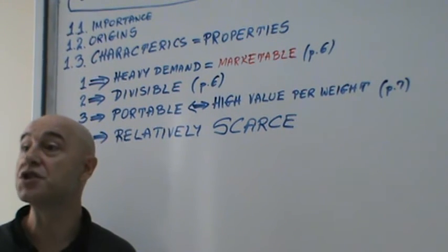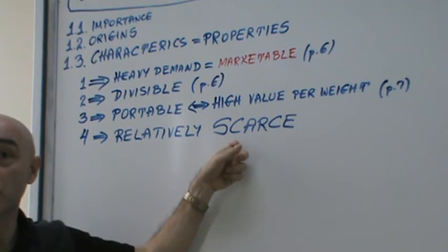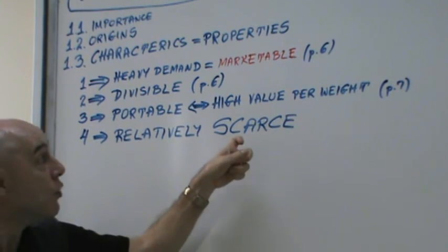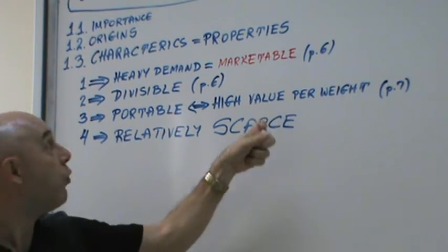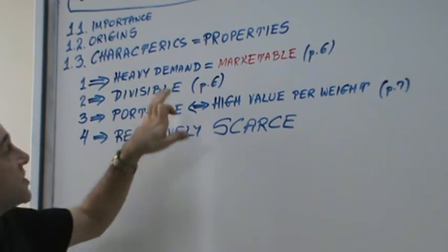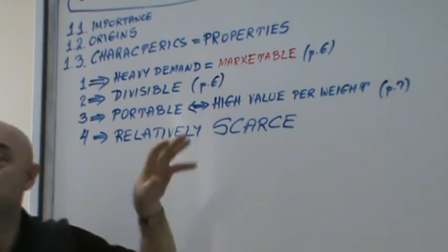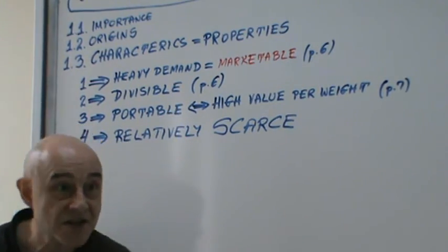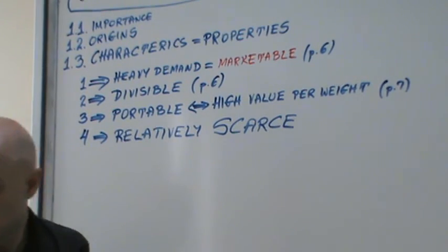Nobody uses water for payment, but in the desert where water is very scarce, water is very valuable and is used. Water is in general very divisible, is very easy to carry. So water has beautiful properties in the desert because it's relatively scarce, it has relatively high value.